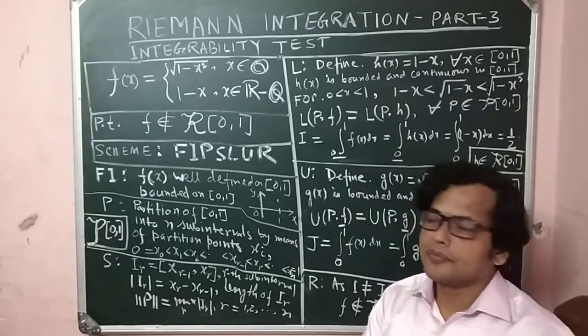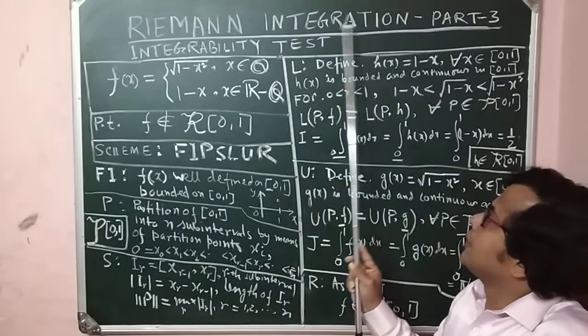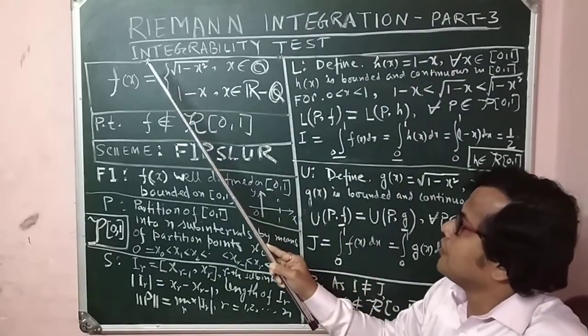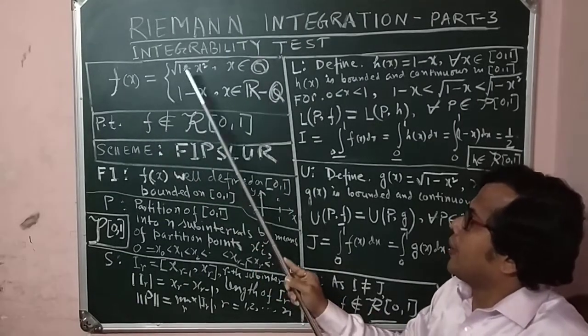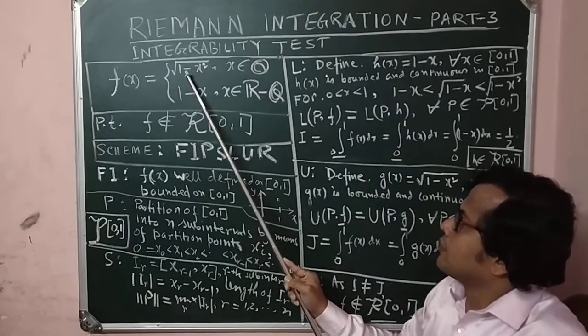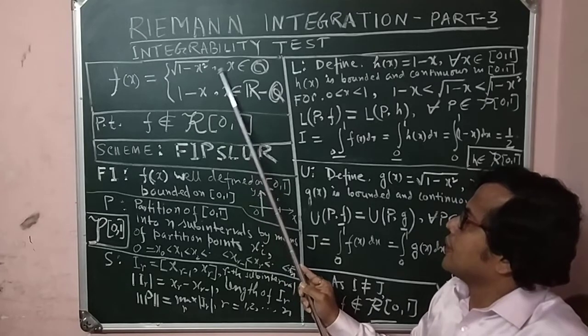Students, I come again with Riemann integration part 3. Integrability test of an example function defined by √(1-x²) for x ∈ Q, and 1-x for x ∈ R\Q.